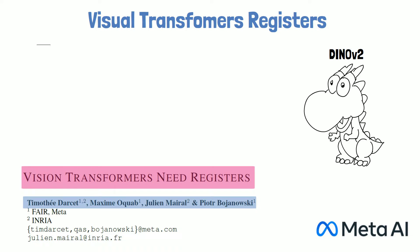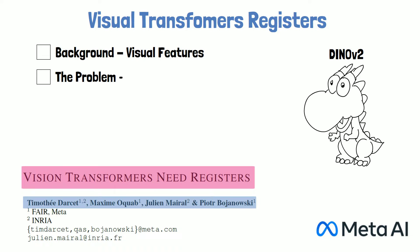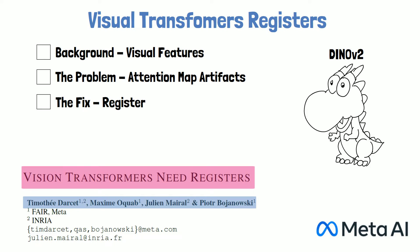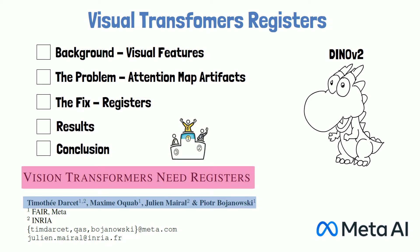Our agenda for this video will be: first, to cover some background about visual features, which is essential to describe what this paper is about. We then explain the problem tackled in this paper, referred to as attention map artifacts, that researchers have found to be common in large foundational computer vision models such as DINOv2. We then describe the fix suggested in the paper, called registers, and finally review interesting results to understand if this approach fixes DINOv2 and other models, or should only be used in certain cases.